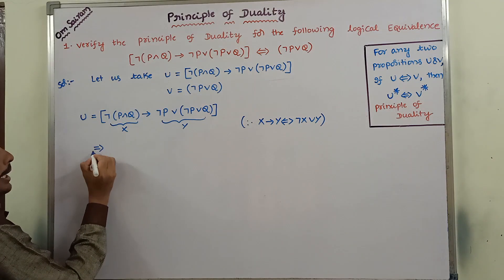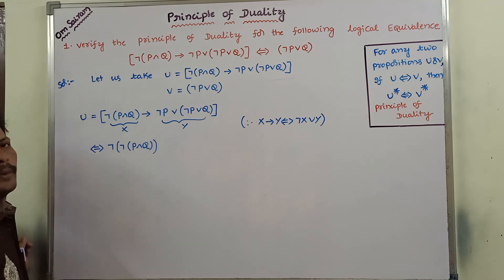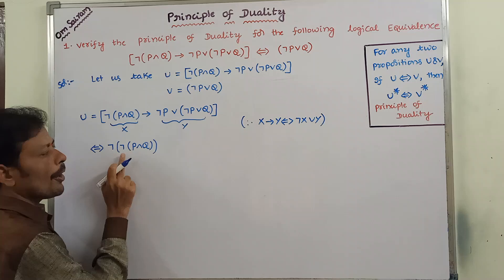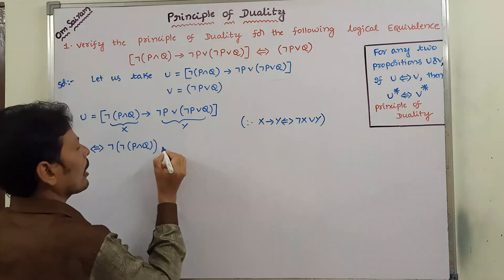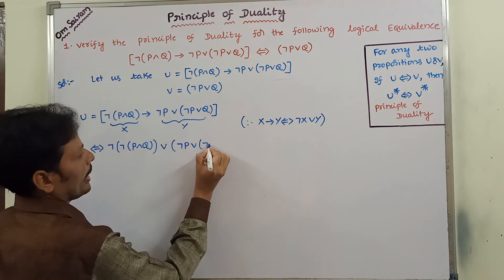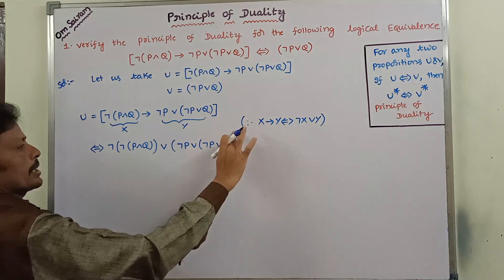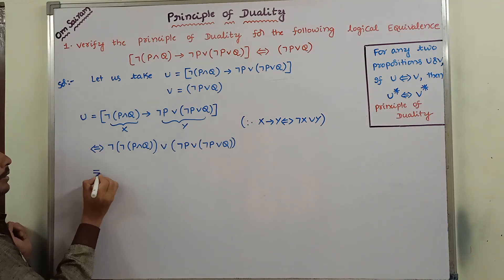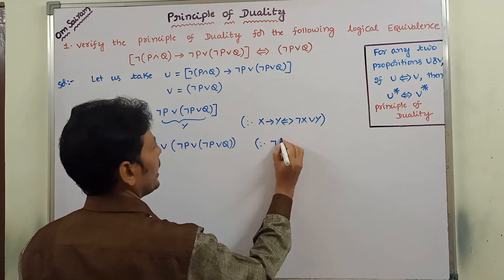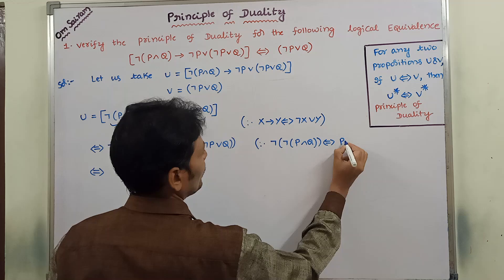So negation X means negation of negation of P and Q — that is negation X. In the place of X, negation of P and Q is there, so negation X means negation of negation of P and Q. In between them, OR is there. Y is nothing but negation P or negation P or Q. We already know that negation of negation of P is nothing but P, so negation of negation of P and Q is logically equivalent to P and Q — by the double negation law.